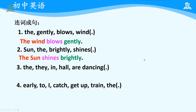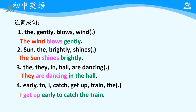They are dancing in the hall. 这里面主语是 they，谓语动词是 are dancing，in the hall 是表示地点的状语。I get up early to catch the train. 这里面主语是 I，get up 是谓语动词，early 是用来修饰 get up 的程度，而 to catch the train 是表示目的——起得早的目的是要赶火车。